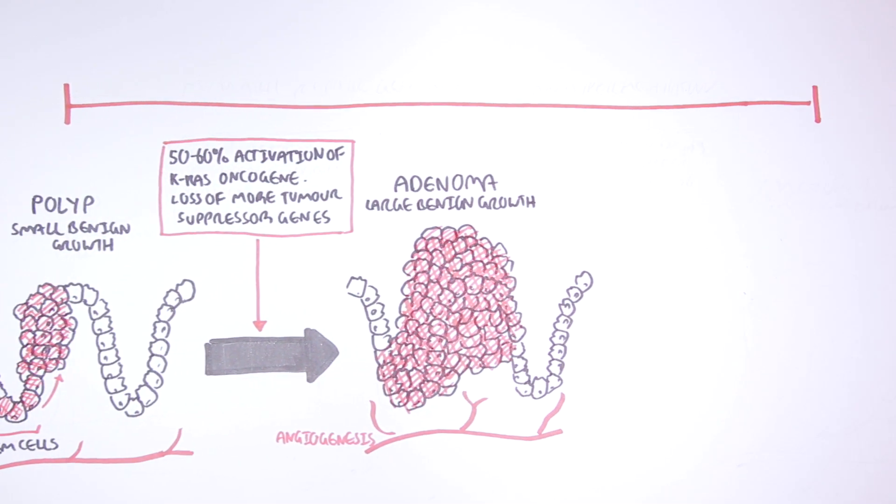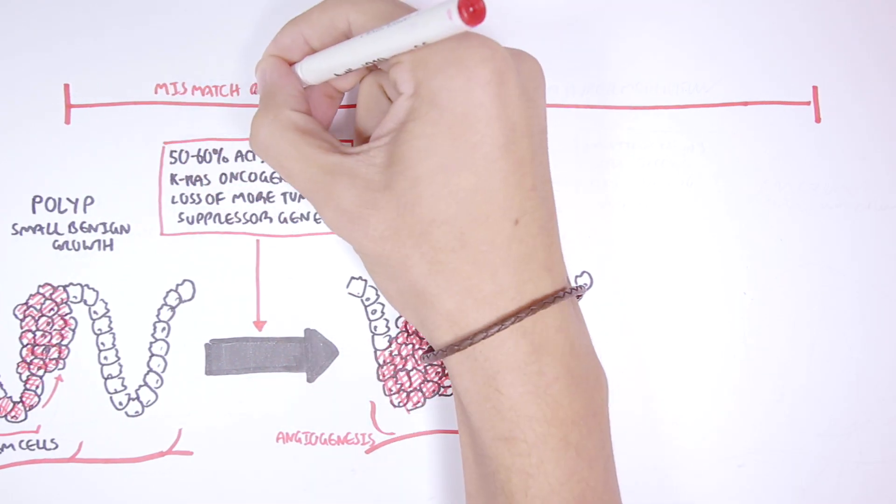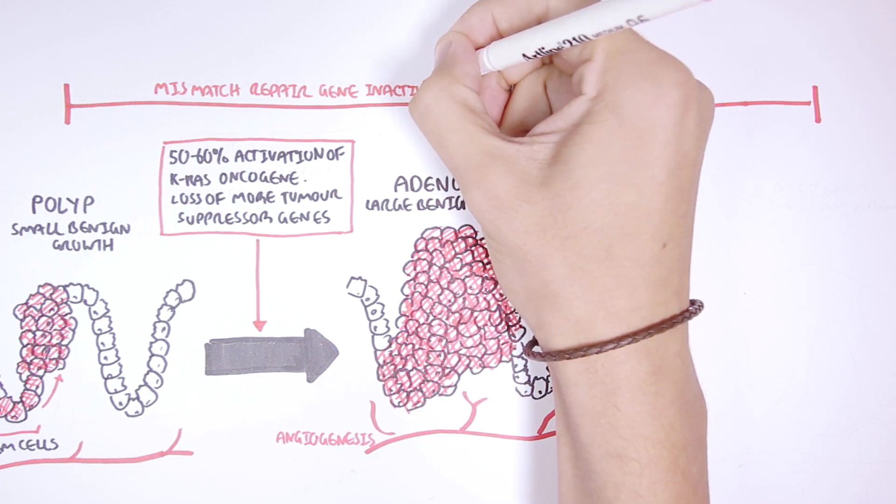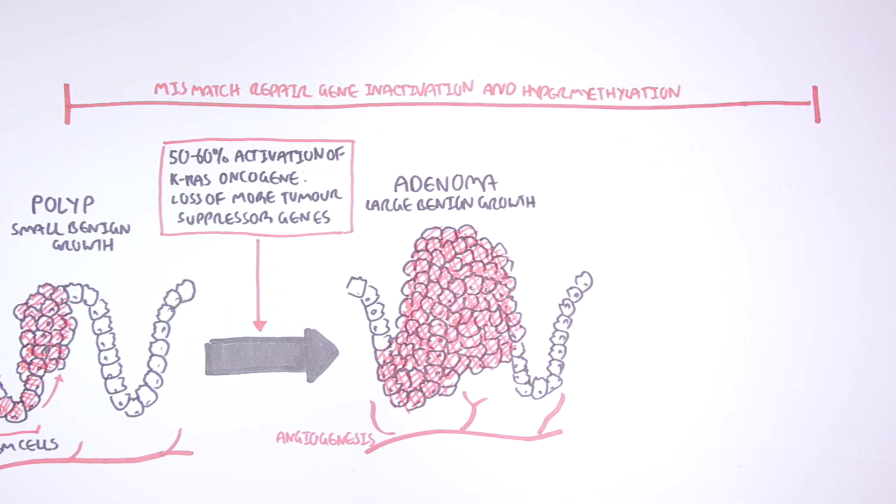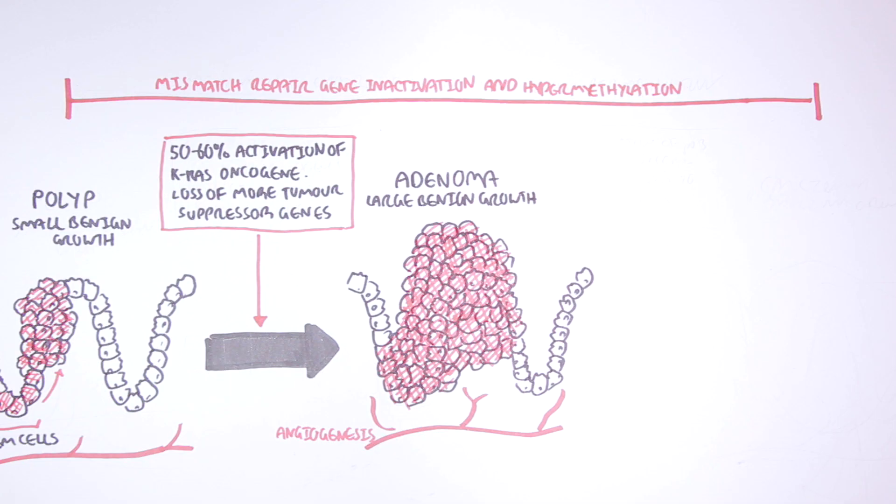The mismatched repair gene normally repairs mutations that occur in the genes. Hypermethylation silences genes.